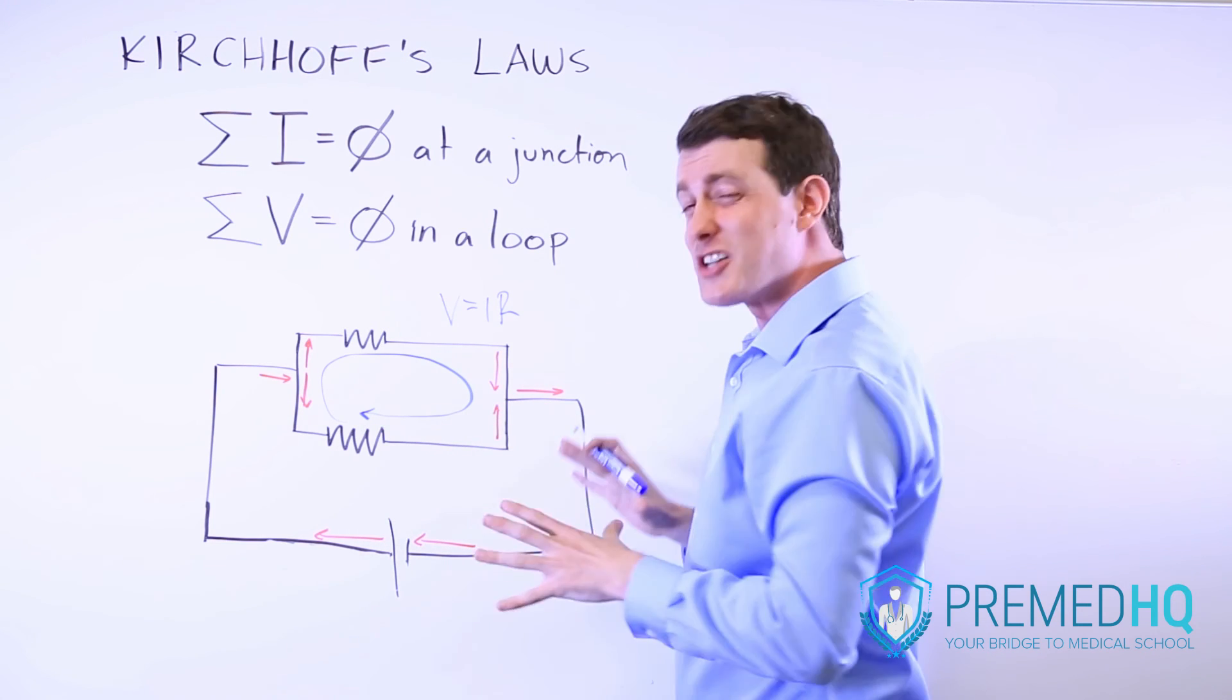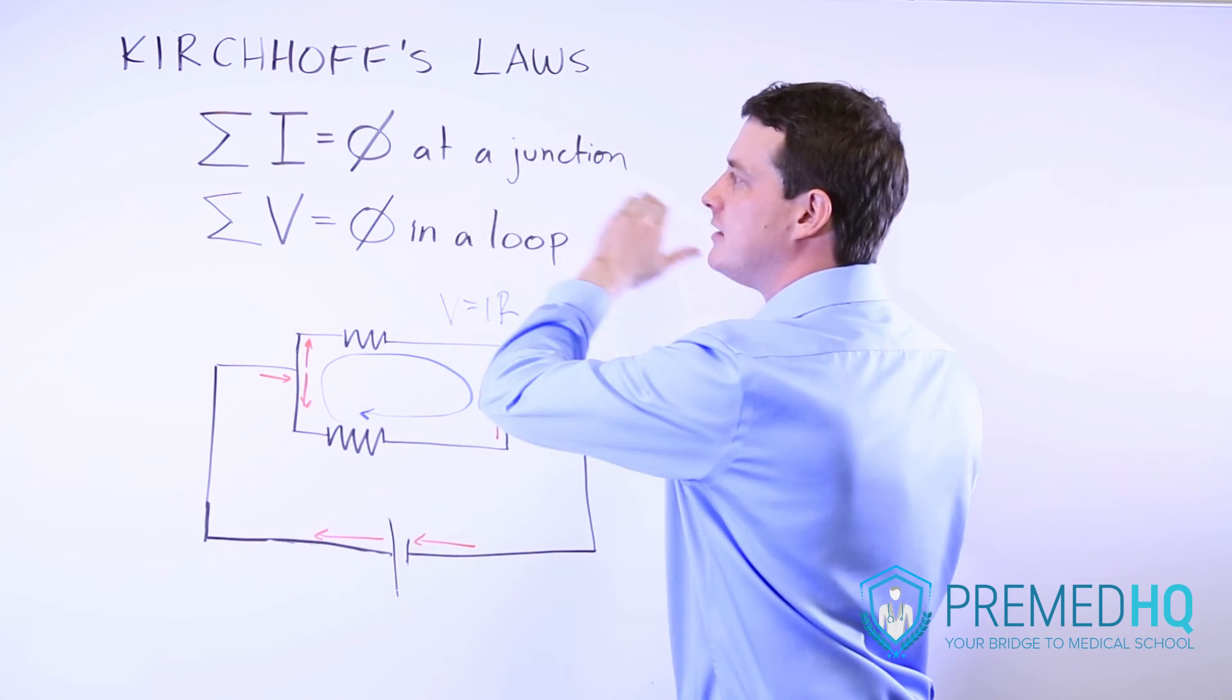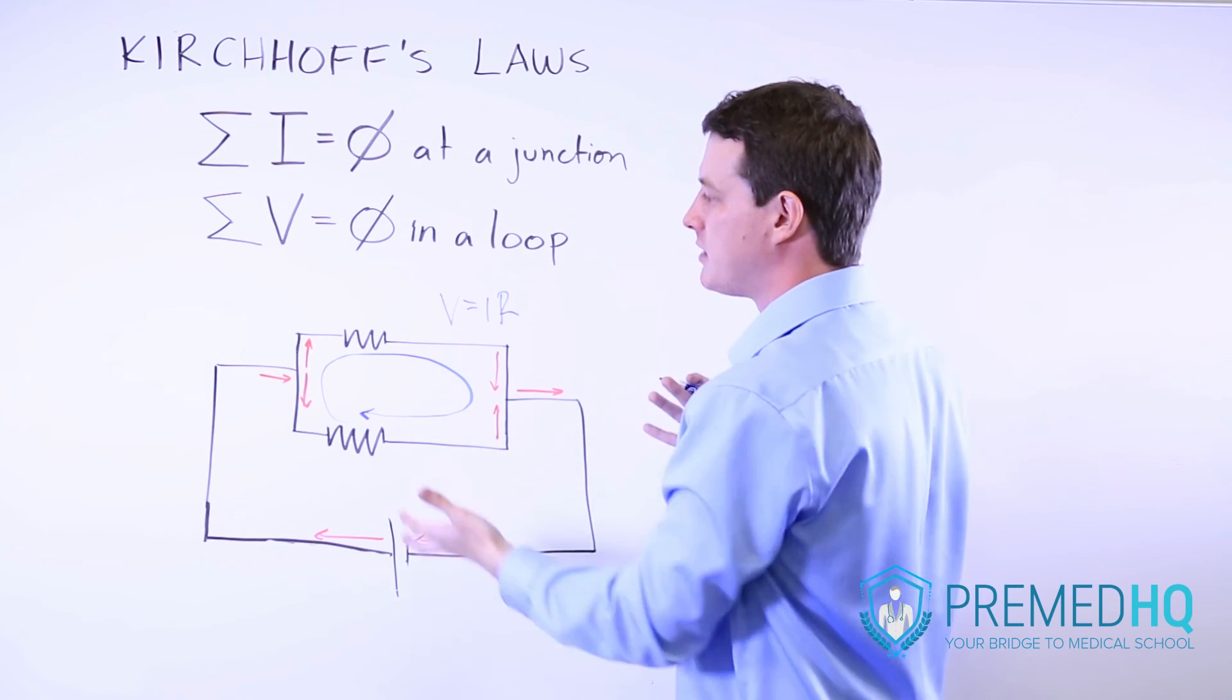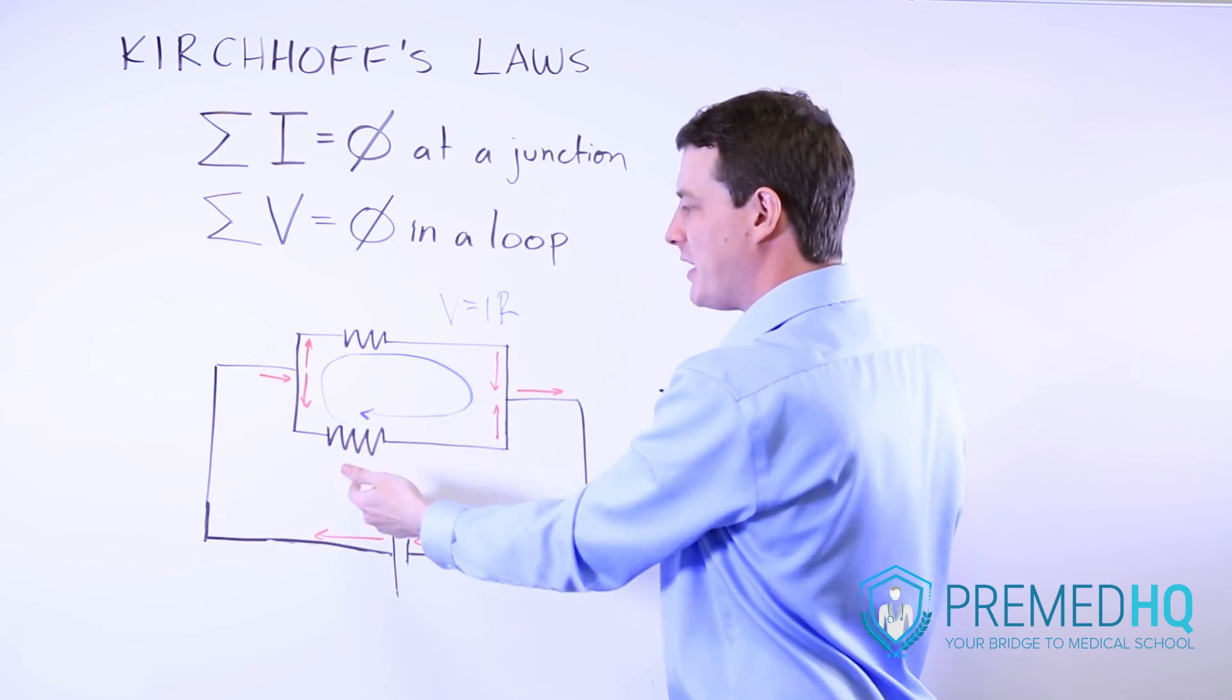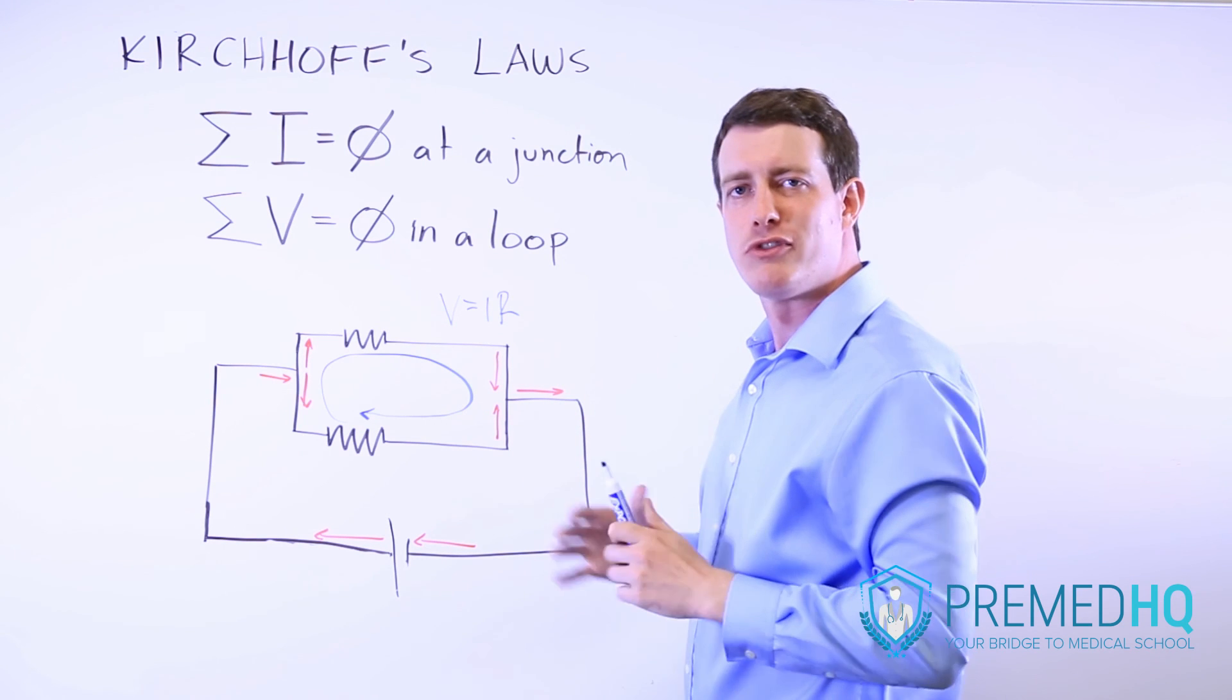And that is all you need to know for the MCAT about Kirchhoff's laws: that this junction law has to apply and that the splitting is going to be all about what will make this loop here have a total sum of voltages of zero.